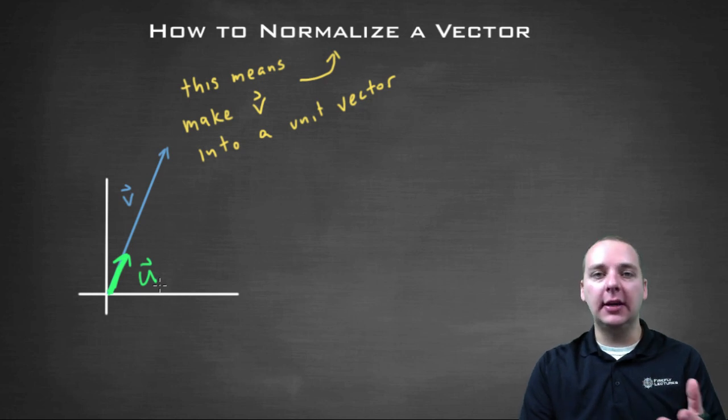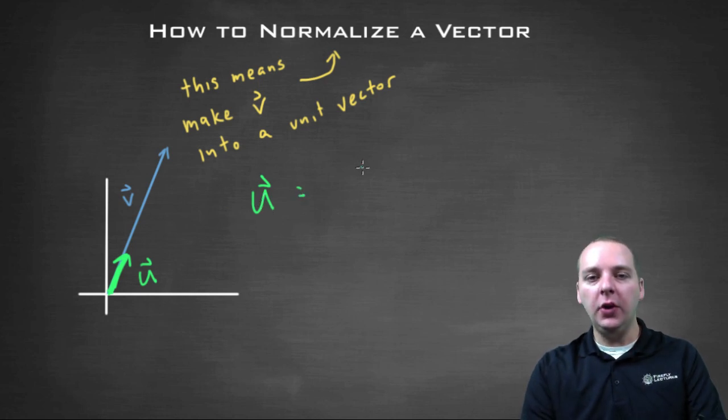So now how do we do this? Like if I actually handed you a vector, how would you turn it into a unit vector? How would you normalize it? Well there's a little formula, and you probably want to commit this guy to memory. To get your unit vector, you're going to take your old vector, and divide it by whatever its own magnitude is.